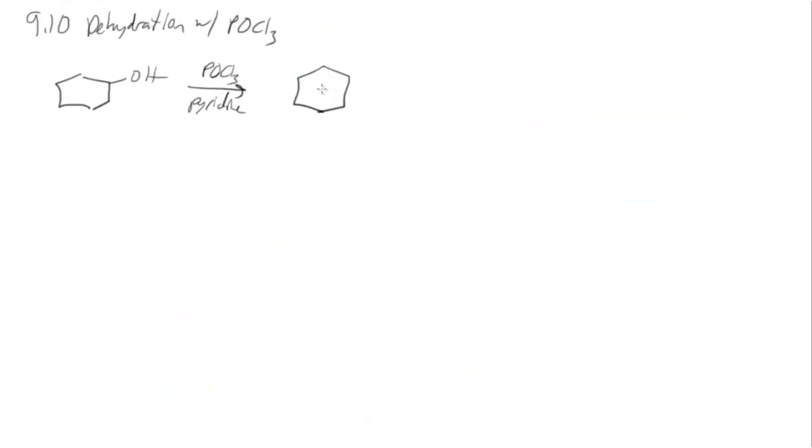So here's a new reaction where we can treat an alcohol with phosphorous oxychloride and pyridine to eliminate and cause the alkene. So we better look at the mechanism and try and figure out what's happening in this reaction. So pyridine is just a base.